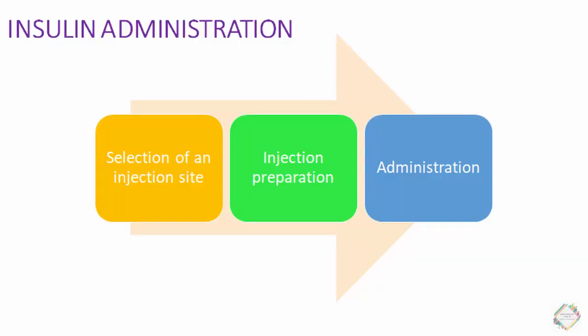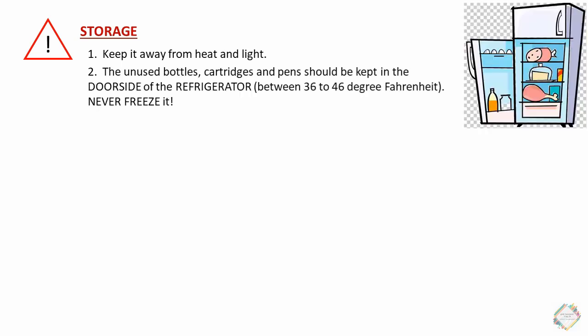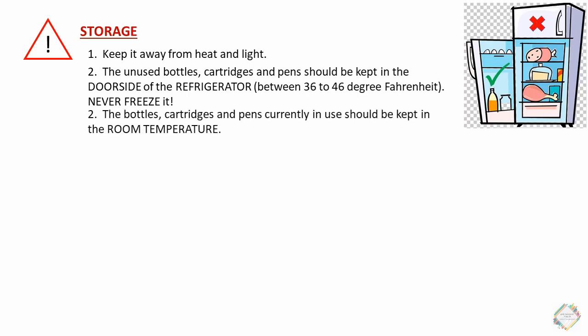An important aspect of insulin administration is storage. Keep insulin away from heat and light, as these can destroy its composition. Unused bottles, cartridges, and pens should be kept in the door side of the refrigerator, between 36 to 46 degrees Fahrenheit, and should never be frozen. Bottles, cartridges, and pens currently in use can be kept at room temperature or in the door side of the refrigerator.